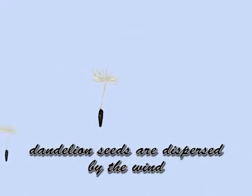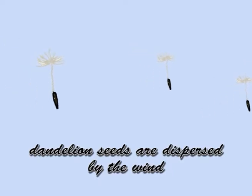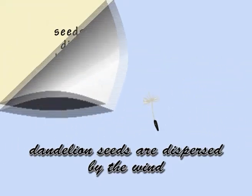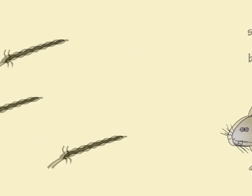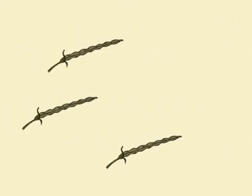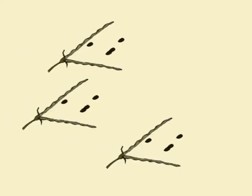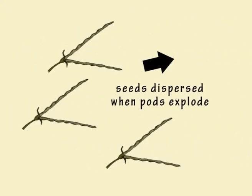Some seeds have feathery parachutes and are dispersed by the wind. Others are dispersed by animals, which eat their fruits or carry them on their fur. And yet others have seed pods that explode, sending the seeds shooting out.